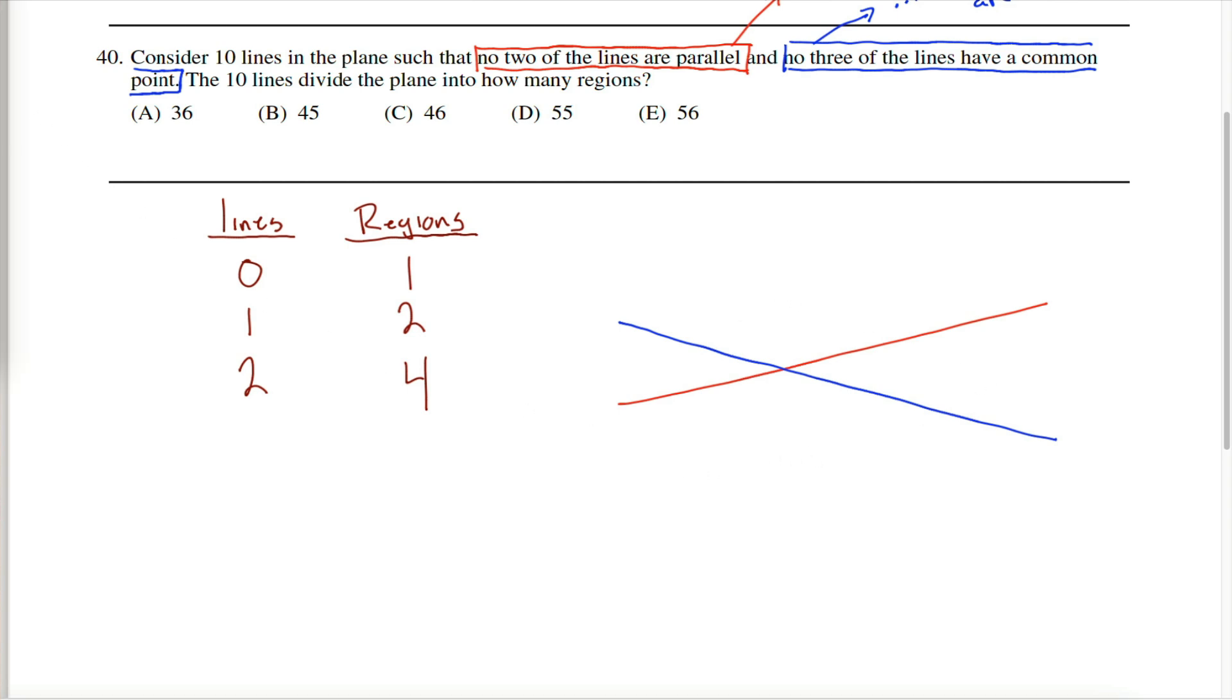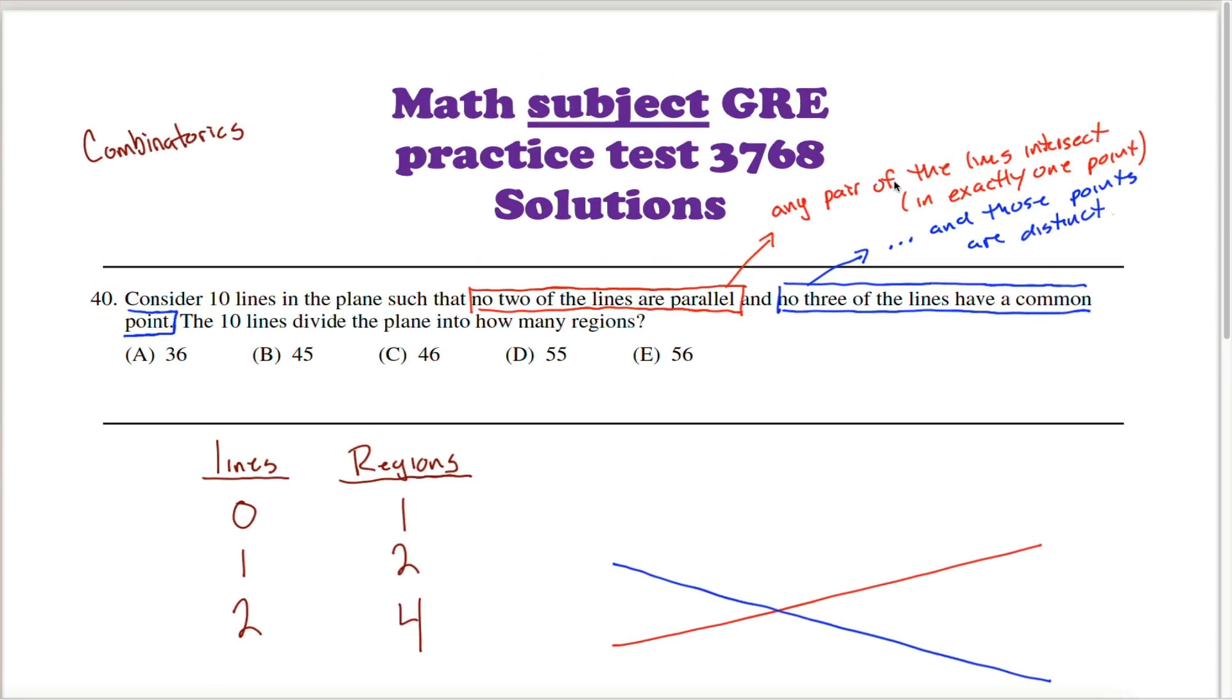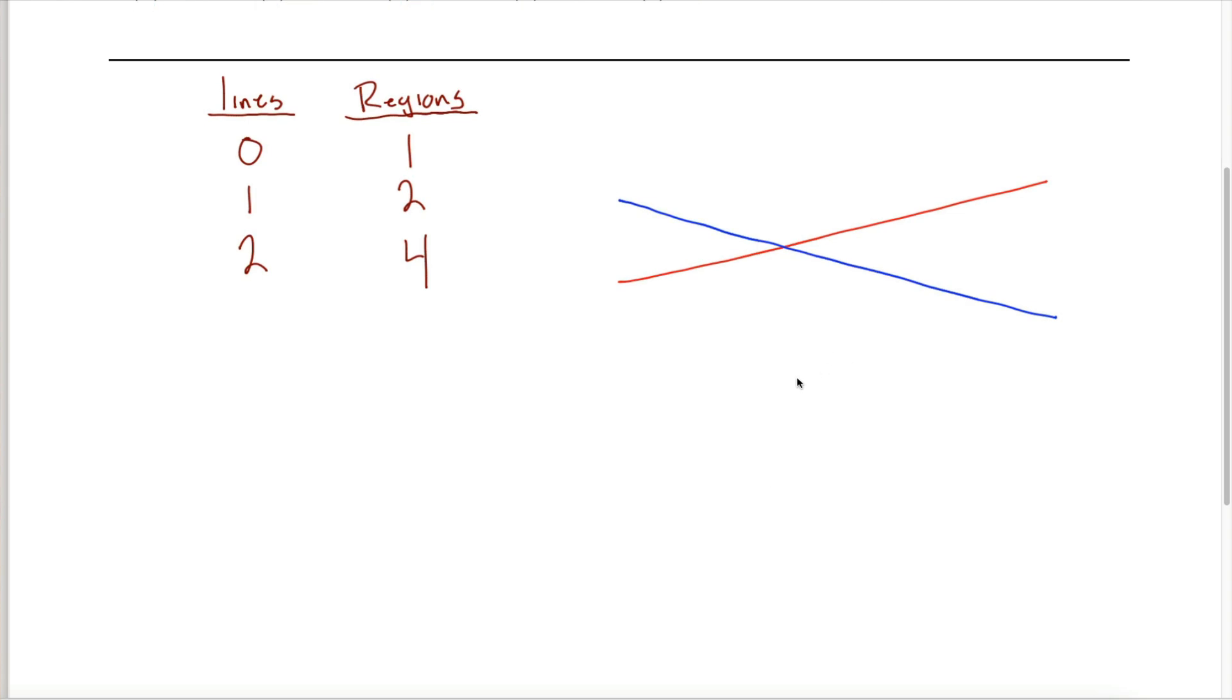Where things get a little bit interesting is if you have three lines. It's still a small enough case that it's easy enough to draw. Just be careful when you draw it. We know that any pair of lines are going to intersect. Make sure you picture those intersections. You wouldn't want to draw your third line like this where the point of intersection is somewhere up here outside of your picture. Maybe instead I can draw my third line something like this.